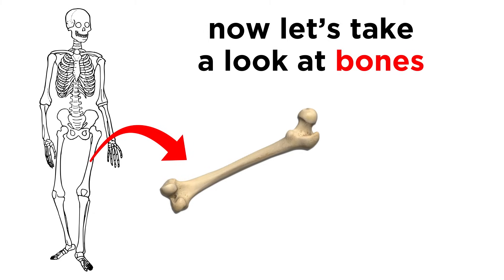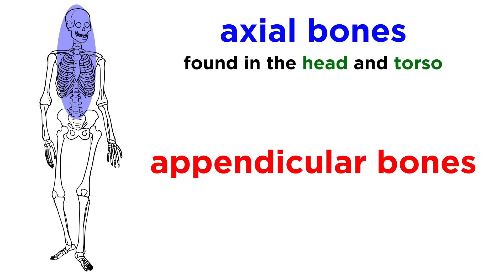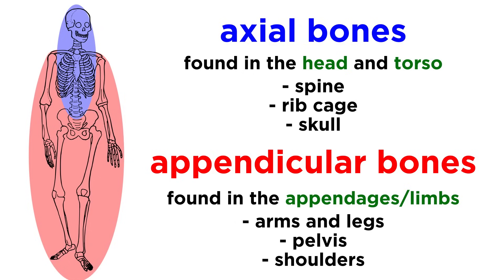Now that we have the cartilage out of the way, let's take a look at bones. Bones can be placed into two categories: axial and appendicular. Axial bones are found in the head and torso, making up the spine, ribcage, and skull. Appendicular bones make up our appendages, or limbs, those being the arms and legs, as well as the pelvis and shoulders.